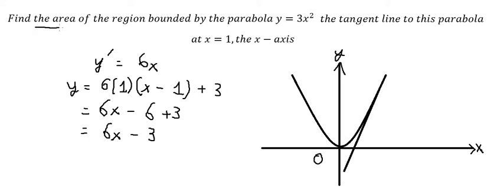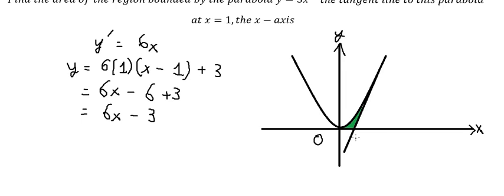So they want to find the area. So the area we need to concentrate, that's about this one. We know this is about 6x minus 3. And we need to find the intersection in here. So this is about x-axis. So we have 6x minus 3 equals to 0. And we got about x equal to 1 over 2.